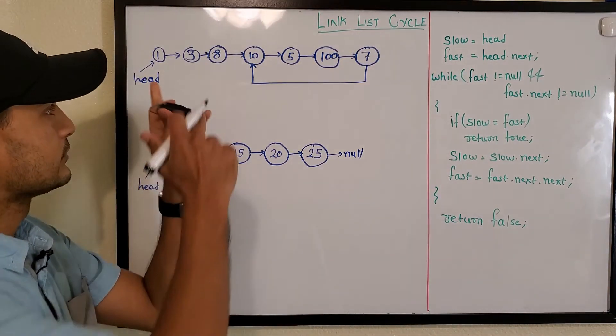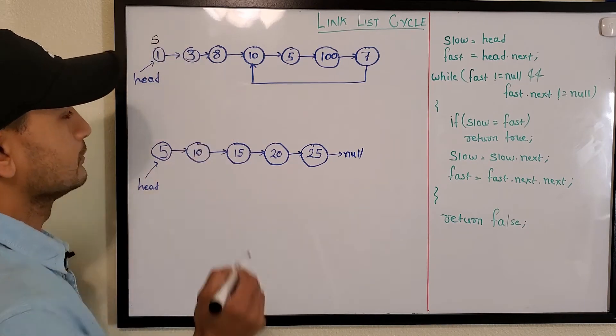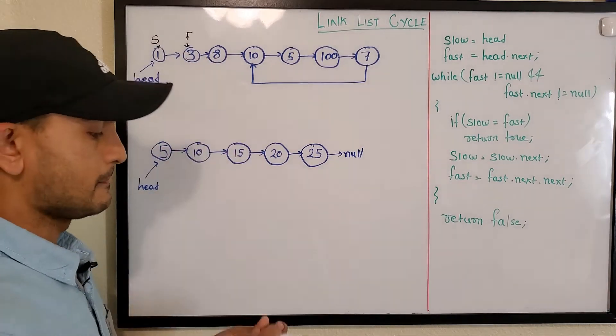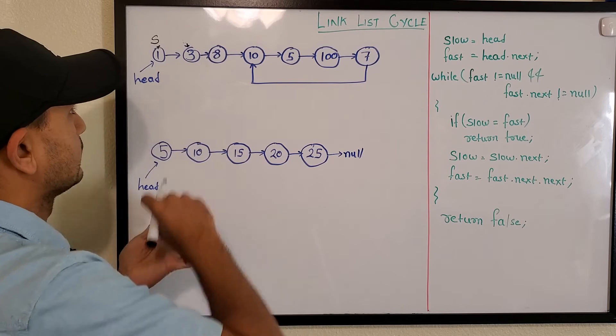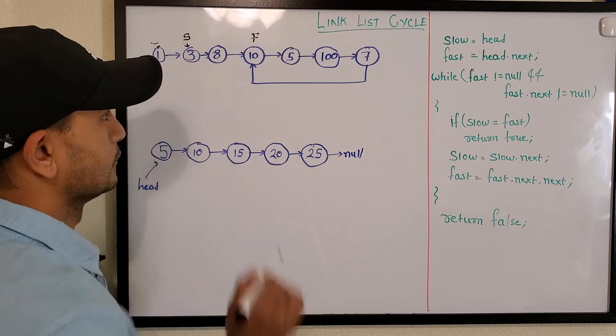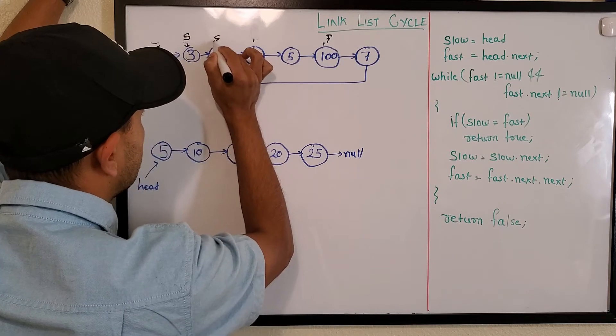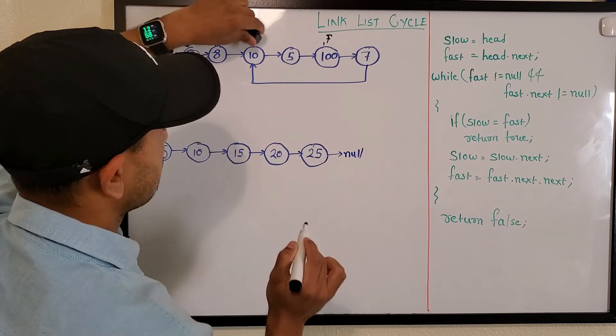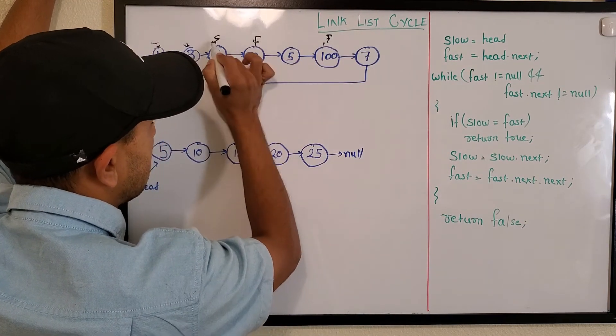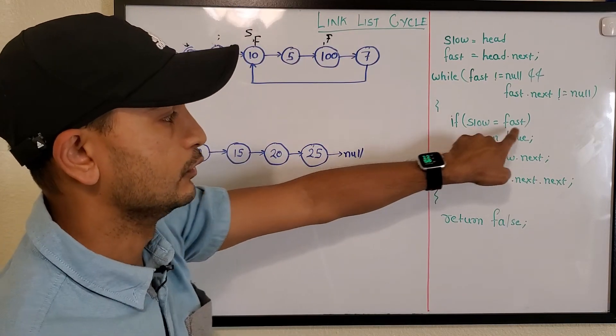Let's implement this on this linked list. This is our slow pointer because slow is head, and this is our fast pointer. Slow will move here and fast will jump two pointers, so fast will be here. In the next iteration, fast will jump here and slow will be here. In the next iteration, fast would be next.next, so fast would come here and slow will come here. Notice that slow and fast are now both pointing to the same node, so slow equals fast, and we return true saying it has a cycle.